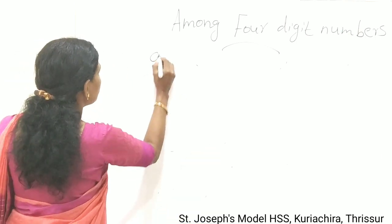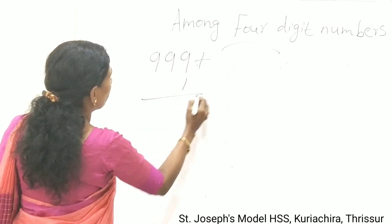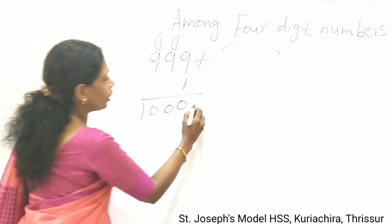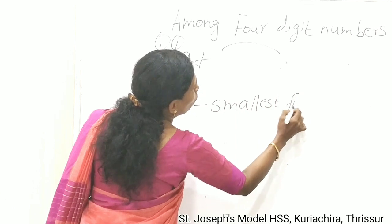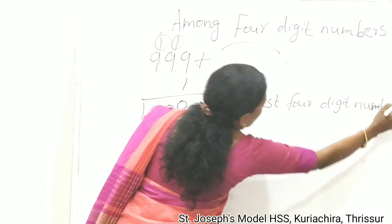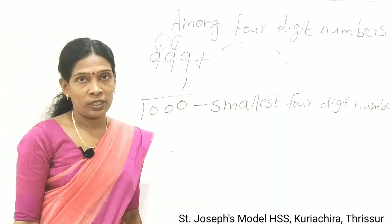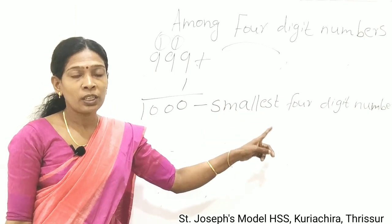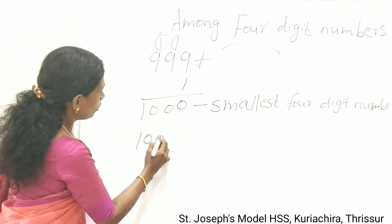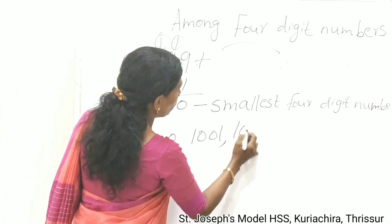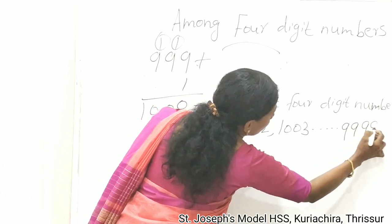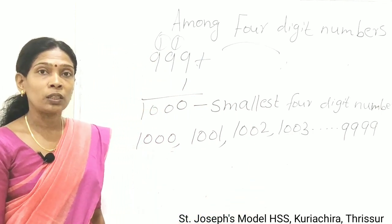When we add 1 to 999, the largest 3 digit number, we get 1000, which is the smallest 4 digit number. We read it as one thousand. 1000 is the smallest 4 digit number. Our 4 digit numbers start from 1000, 1001, 1002, 1003, up to 9999. All these numbers are 4 digit numbers.